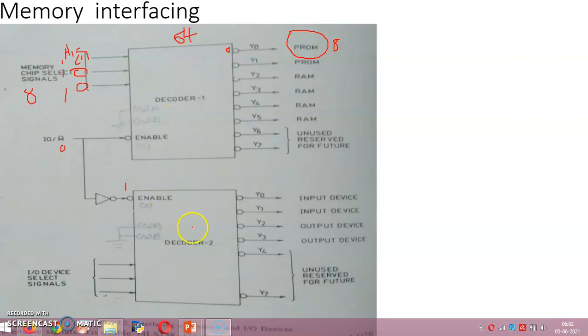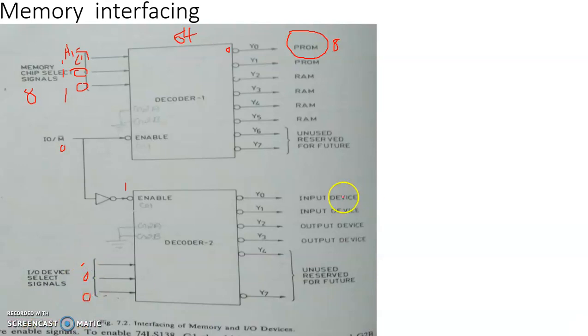In the case of IO devices, this is more vivid. When the address is meant for an IO device, decoder 2 will be enabled. Depending upon the status 0, 0, 0 here, input device 1, that is Y0 output of the decoder, will be enabled.